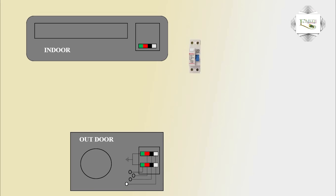First condition: DP Circuit Breaker — means Double Pole Circuit Breaker.